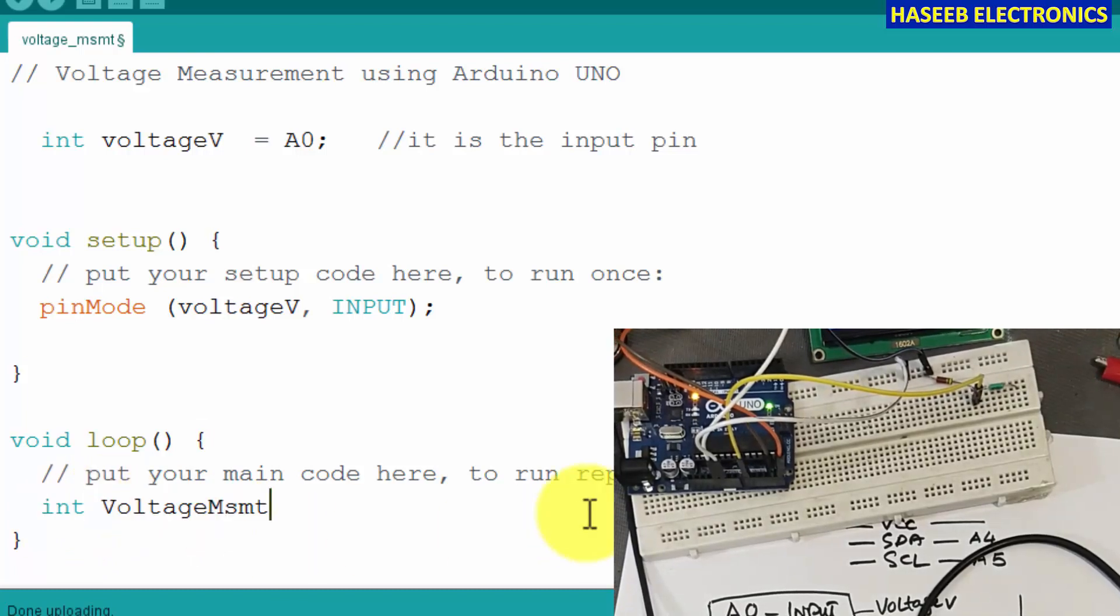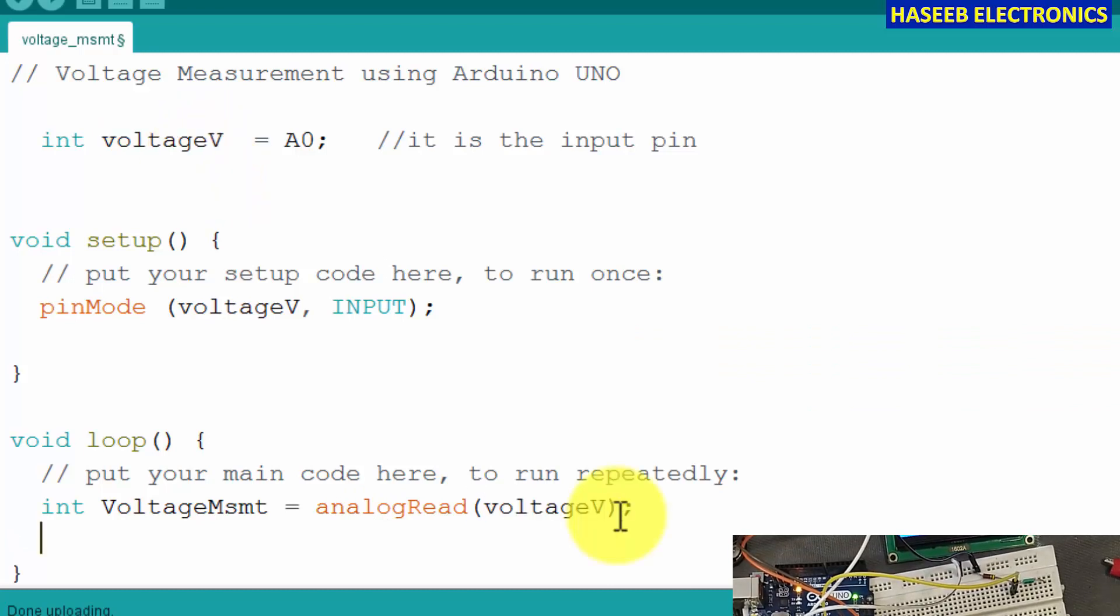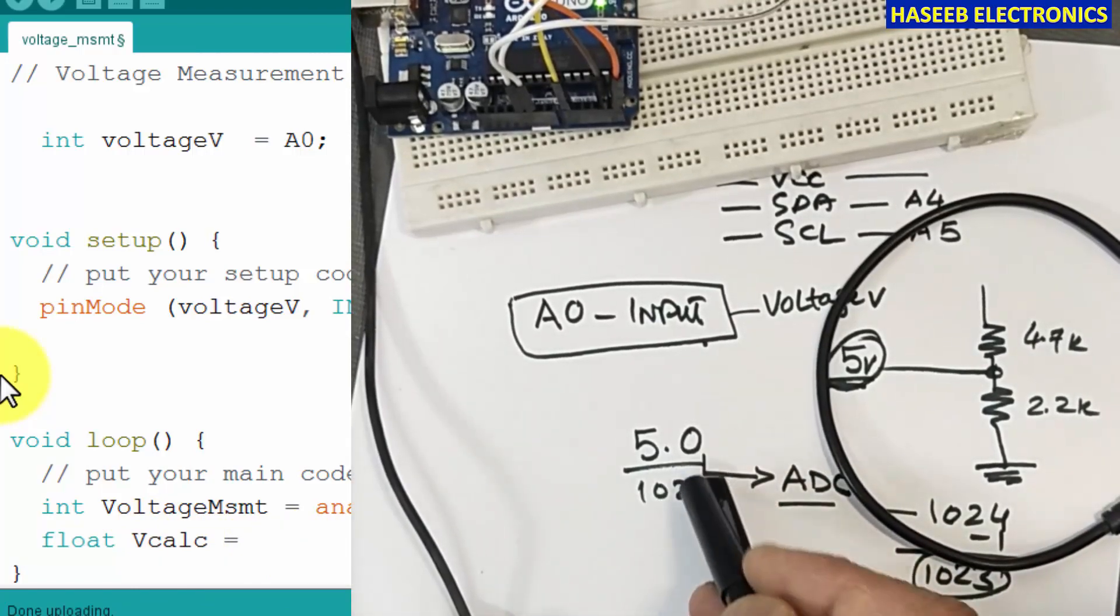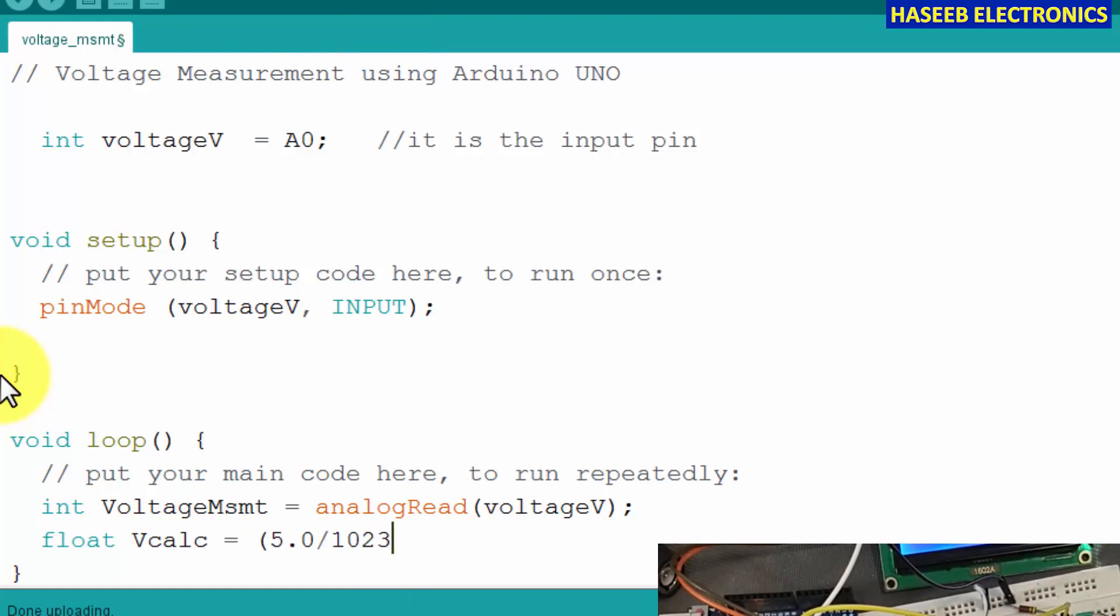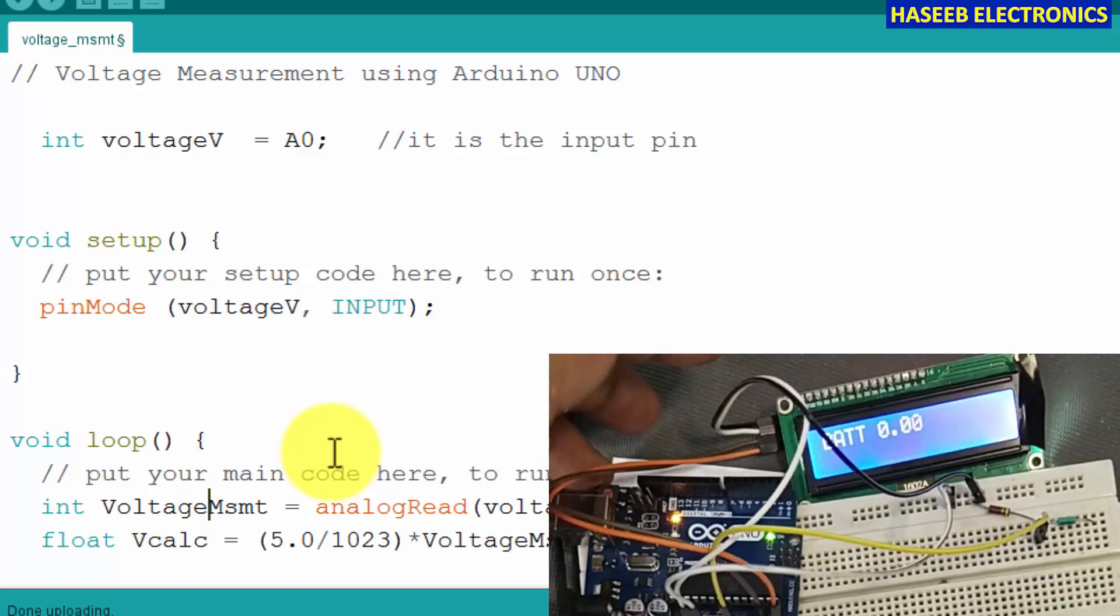We will write int voltage measurement is equal to analogRead from which pin? This pin voltage value. We measured the voltage here. Now we want to calculate. Float, we assigned a name V calculation, calculated voltage. That is equal to: we said 5 volts are divided into 1023 steps, so we will measure 5.0 volt divided by 1023, multiply with voltage measurement. This is the total full scale deflection FSD value and what is the current value. Multiply with voltage measurement. We measured the voltage here where we want to display.